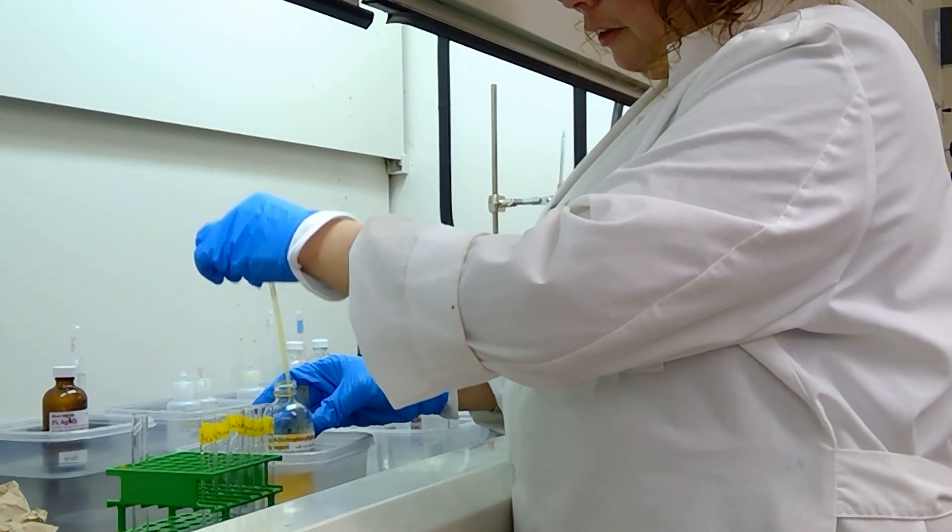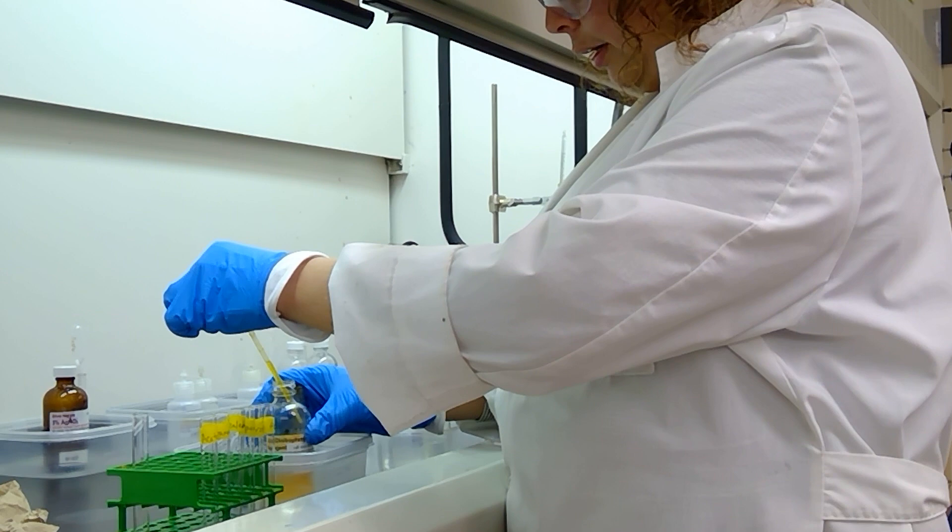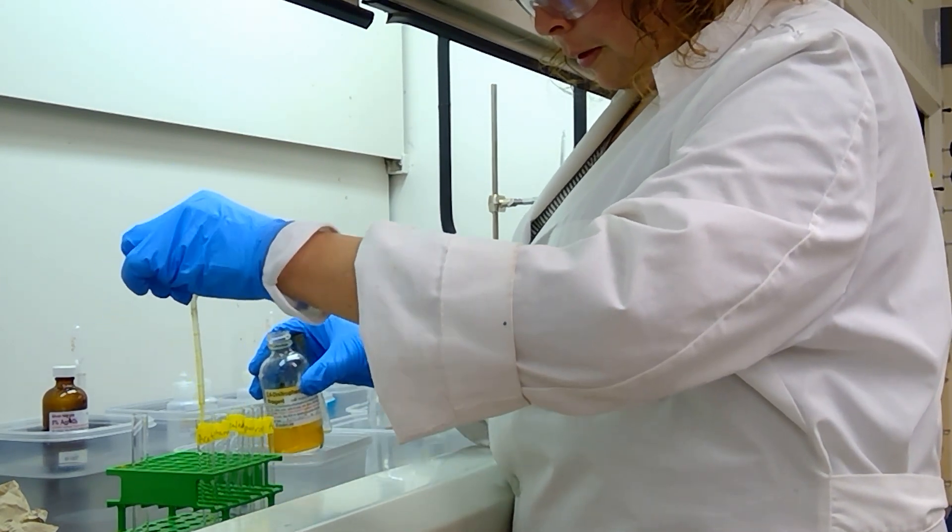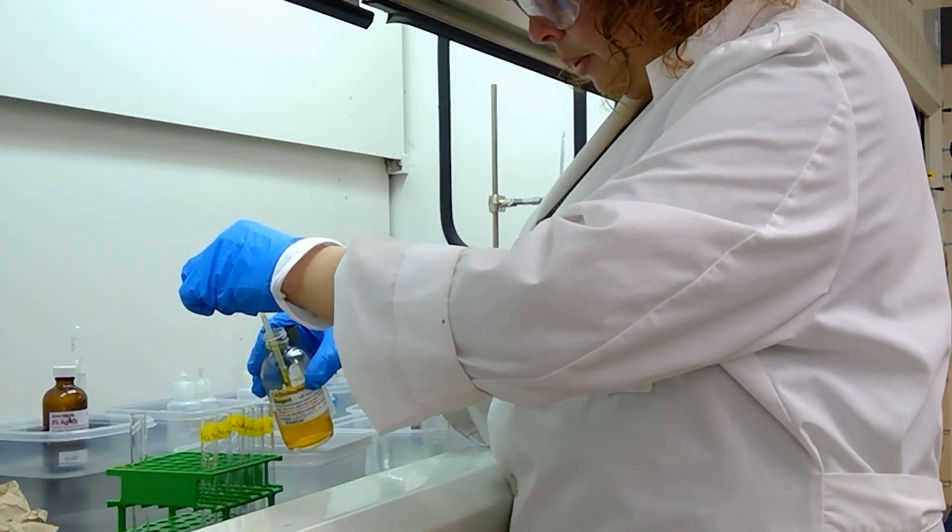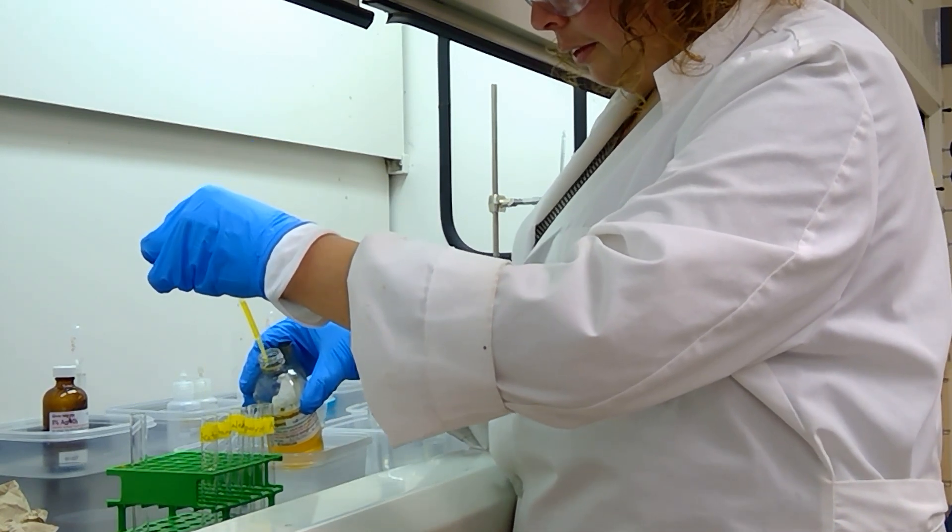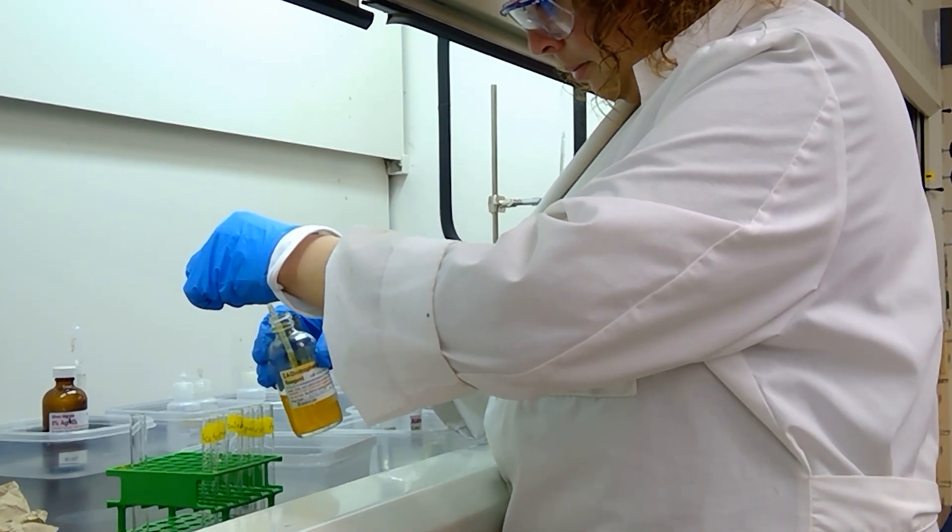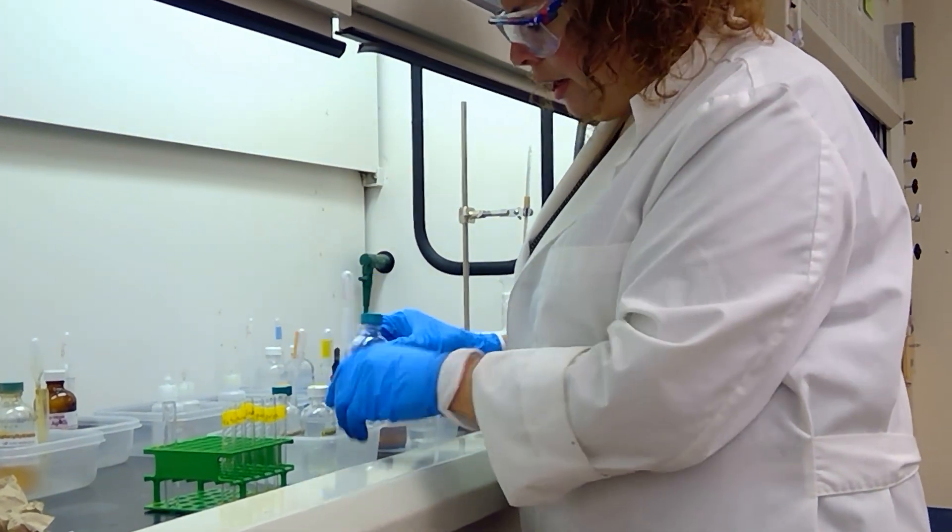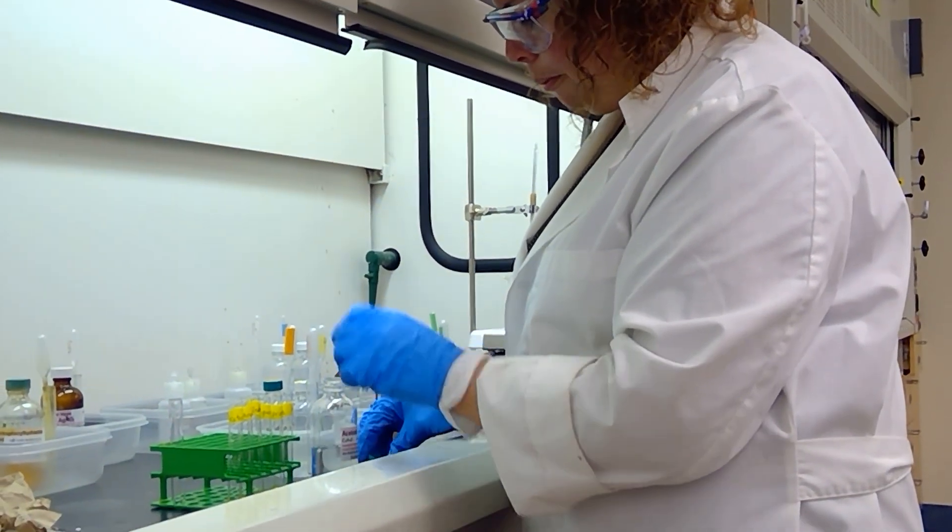We're starting this experiment by measuring out half a milliliter of 2,4-dinitrophenylhydrazine solution into each of our test tubes. We're doing the same six compounds that we did in the bisulfite test. So we have measured out our 2,4-dinitrophenylhydrazine into each of the samples.